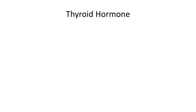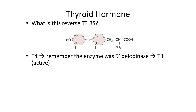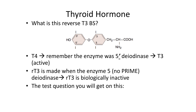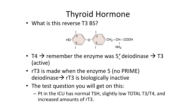Reverse T3 is metabolically inactive. T4 is normally converted to T3 via 5-prime deiodinase by removing iodine from the 5-prime position. Reverse T3 is formed when 5-deiodinase removes the iodine from the 5th carbon (not the 5-prime position), producing a biologically inactive molecule.